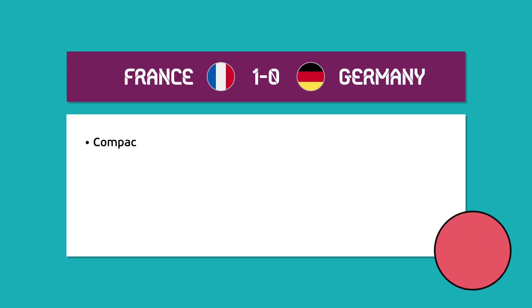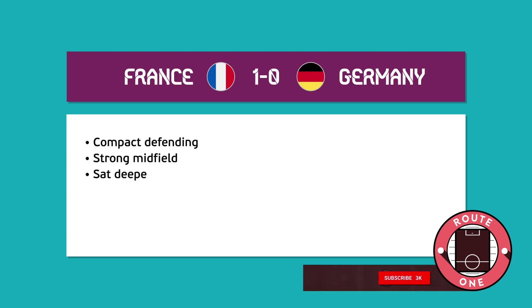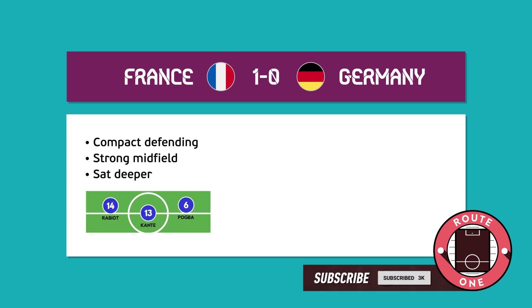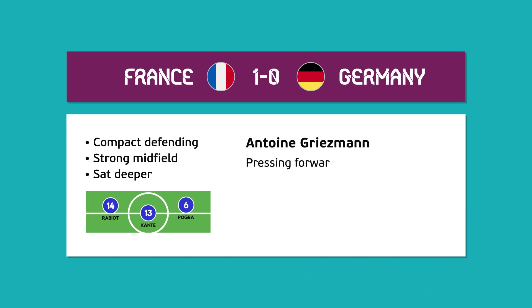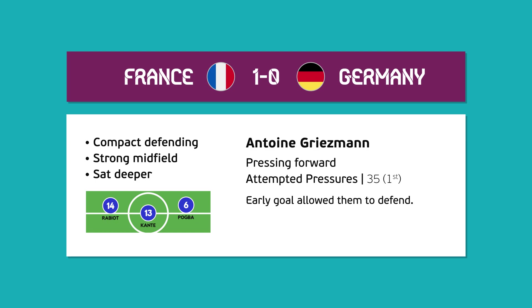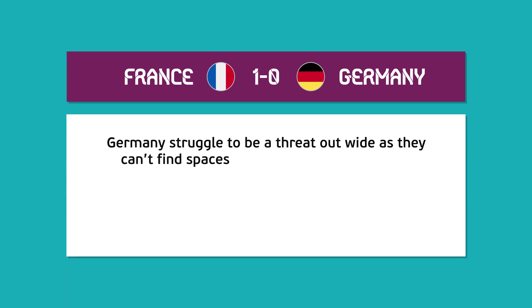After France got their opening goal, in the second half especially, the midfield is really what made it hard for Germany. France did sit back a little more in the second half, and with the midfield of Pogba, Kante, and Rabiot being aggressive and intercepting well, and Griezmann in the front three pressing at the front and closing down, he attempted the most pressures of any French player. A similar approach by England, where they can look to counter, could really hurt Germany, forcing them to keep moving the ball side to side from one fullback to another to get space to cross into the box.